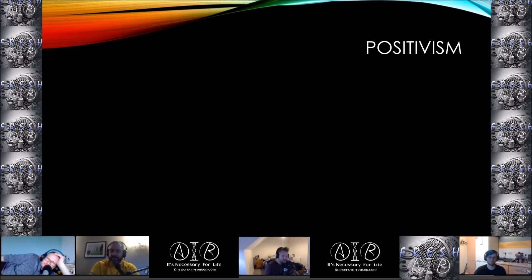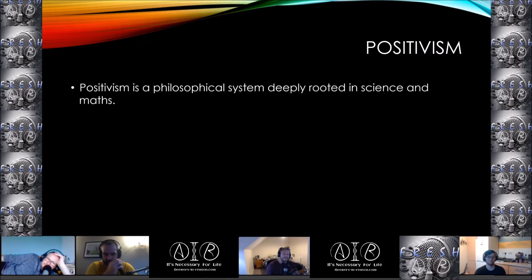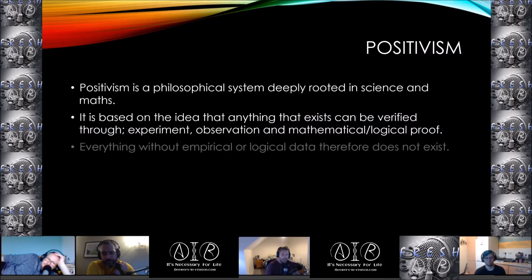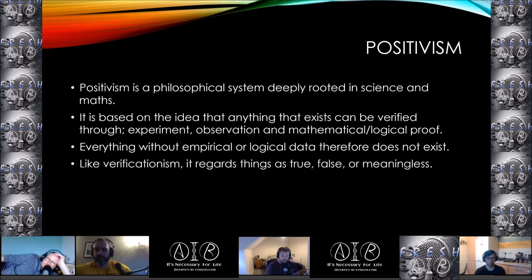The last theory to cover is positivism. Positivism is a philosophical system deeply rooted in science and maths. It is based on the idea that anything that exists can be verified through experiment, observation, and mathematical or logical proof. Everything without empirical or logical data, therefore, does not exist. Like verificationism, it regards things as true, false, or meaningless.